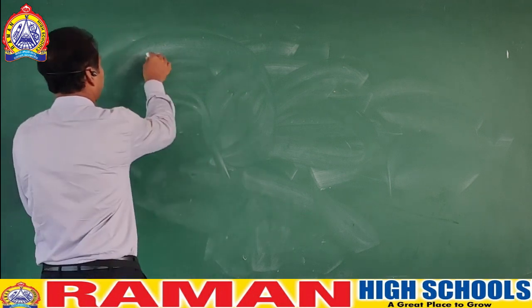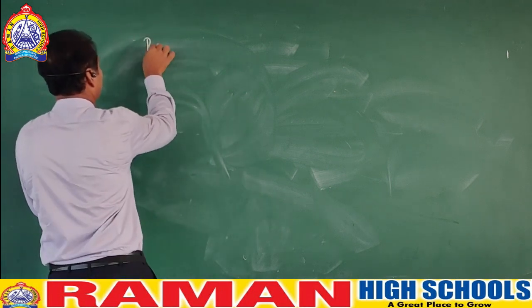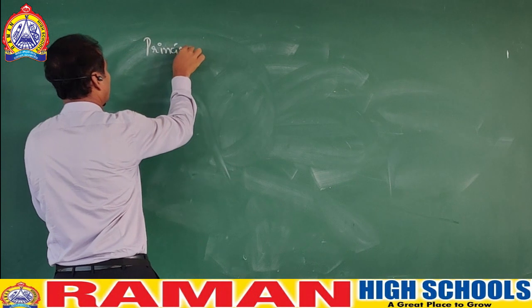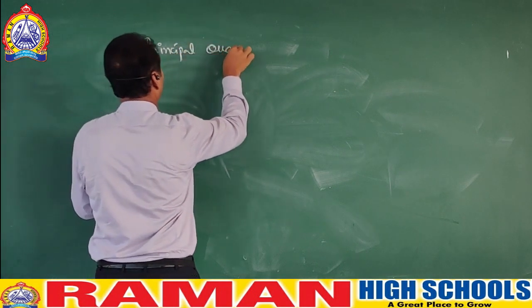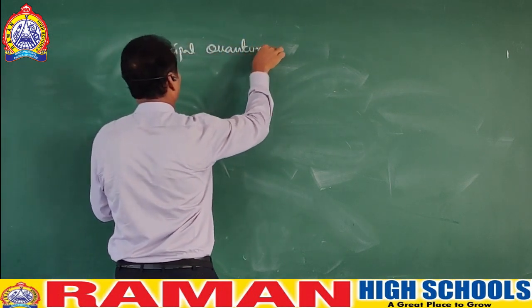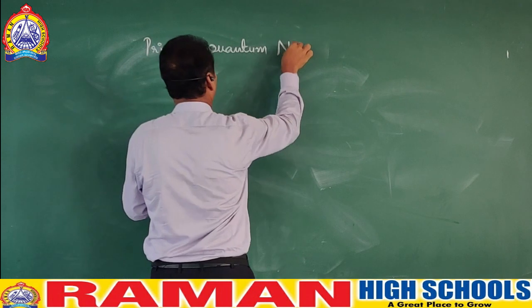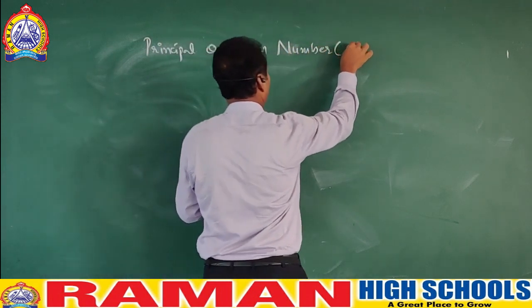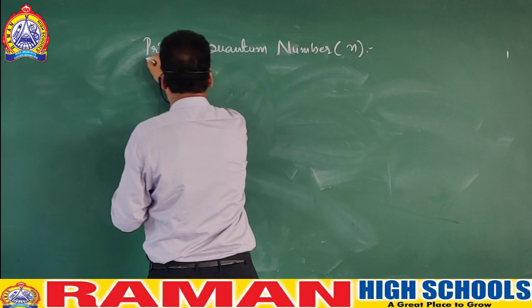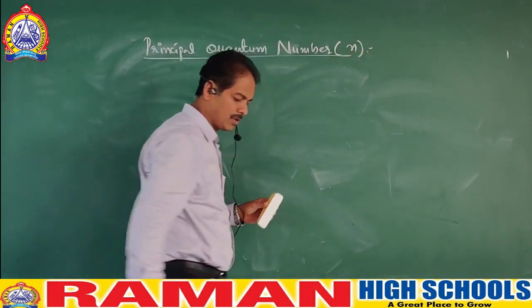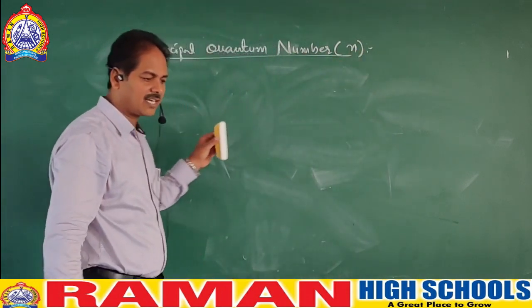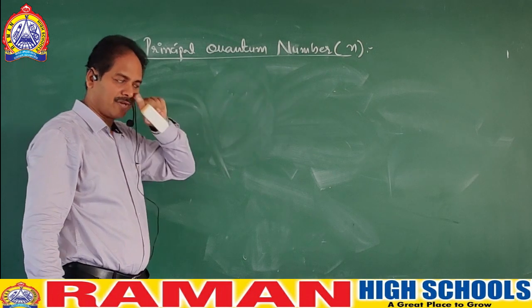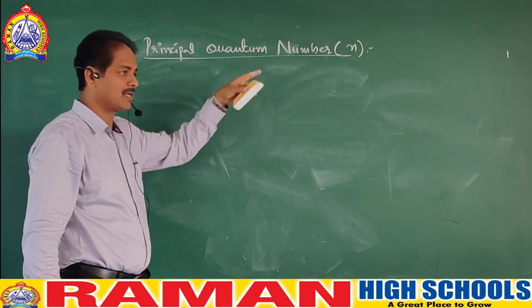The first quantum number is the principal quantum number. You know this already because in the Bohr's atomic model, we have seen this symbol before.